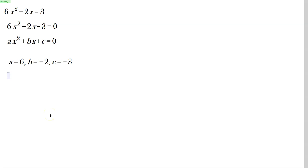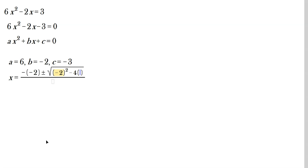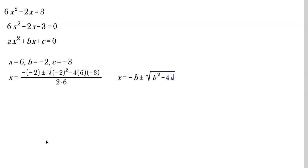Let's plug into the quadratic formula: x equals the negative of negative 2, plus or minus the square root of (negative 2) squared minus 4 times 6 times negative 3, all divided by 2 times 6. The quadratic formula is negative b plus or minus the square root of b squared minus 4ac, all over 2a.